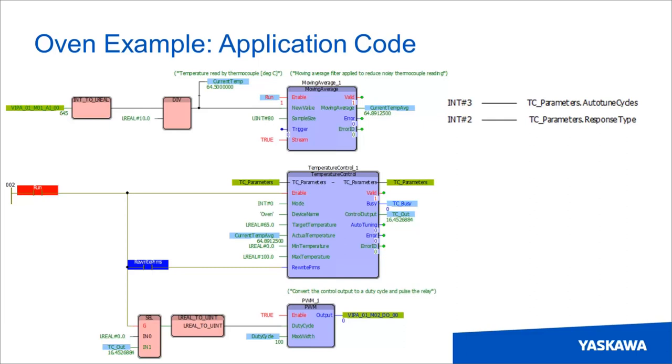And here the sample size is 80, and the task time of the POU, which isn't shown, is 16 milliseconds. So this filter samples across 1.28 seconds. And it took about four and a half minutes for the oven to finish its autotuning process for three cycles. And the control output from the temperature control function block is converted to a duty cycle by the PWM block, which is used to pulse the heater. And the temperature control will report an error if the feedback temperature value does not increase by 1 after 30 seconds of the heater being on.